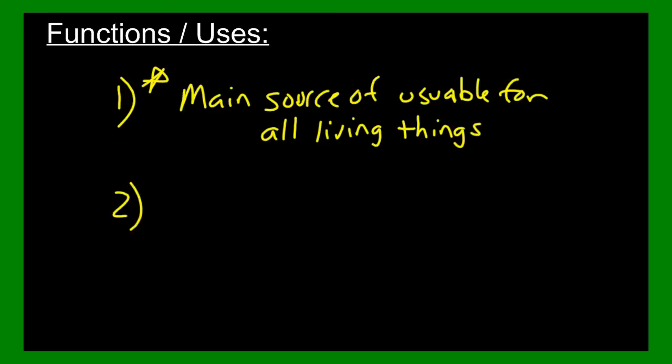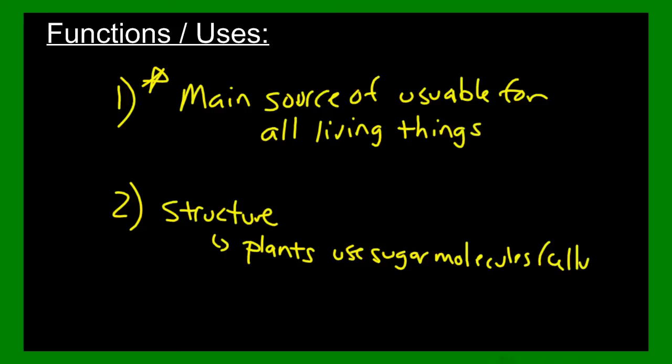Also, a second use for carbohydrates is for structure, structure like things found in plants. Plants use special arrangements of sugar molecules called cellulose to make the ability to grow and make bigger units, so it's kind of like building blocks for trees. They need cellulose to be able to build themselves up. Those are the main functions or uses of sugar.